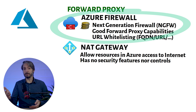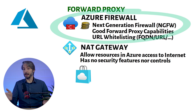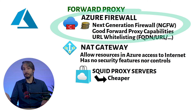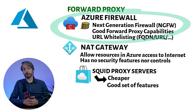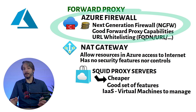There are also excellent marketplace products which can be set up. If you only need forward proxy functionality, you can deploy, for example, Squid proxy servers. They are a lot cheaper compared to Azure Firewall, and also come with a good set of security features. Of course, with this solution, you do have virtual machines and a bit more management overhead.